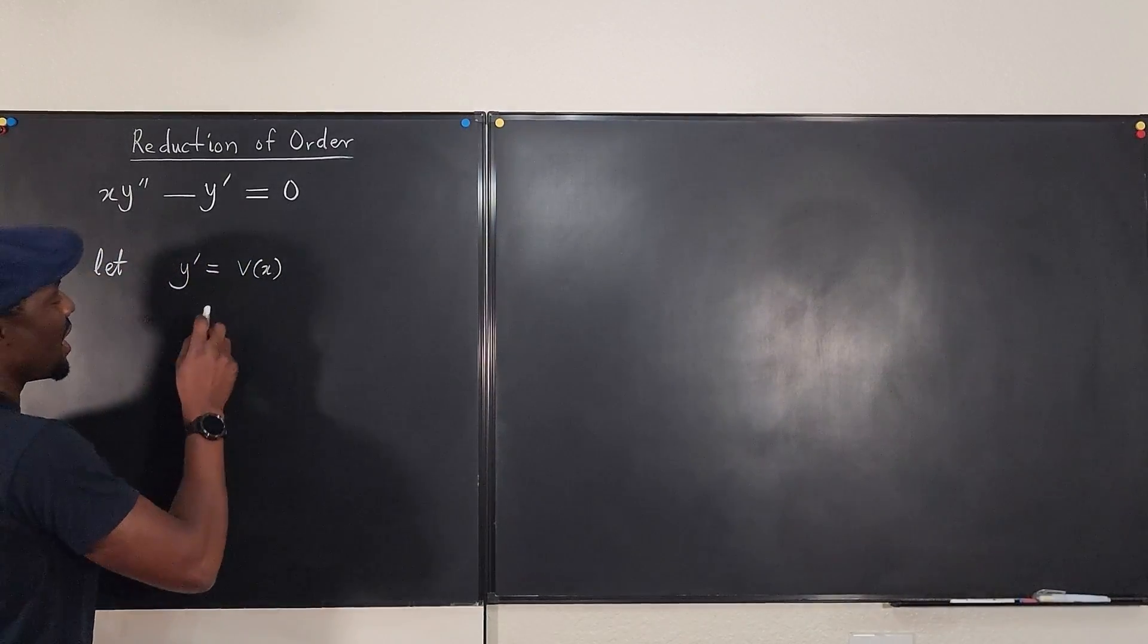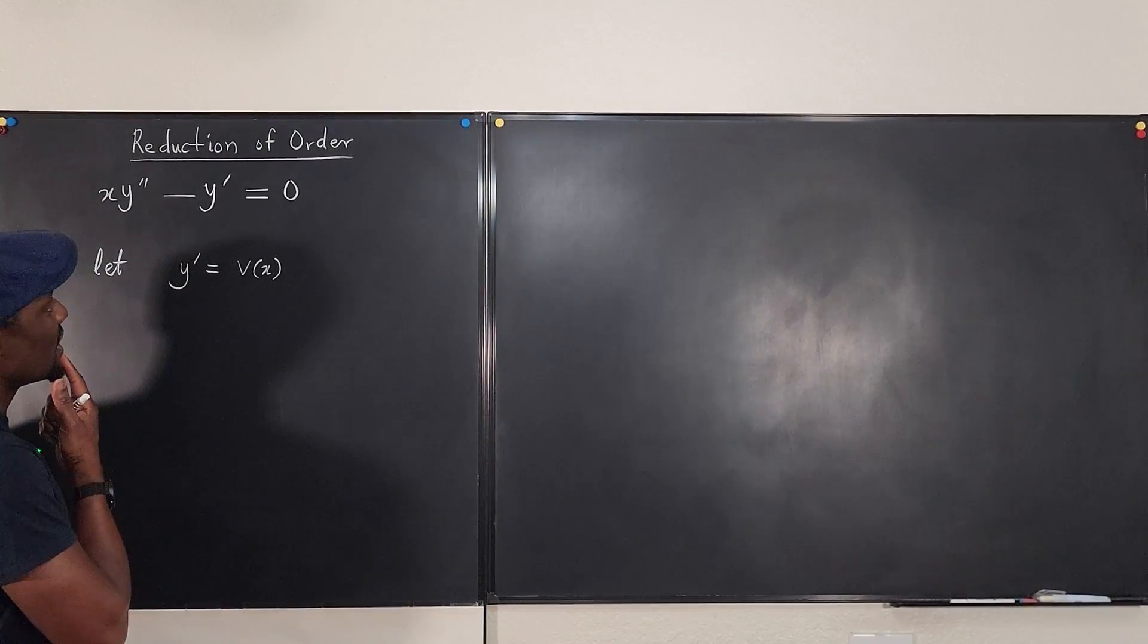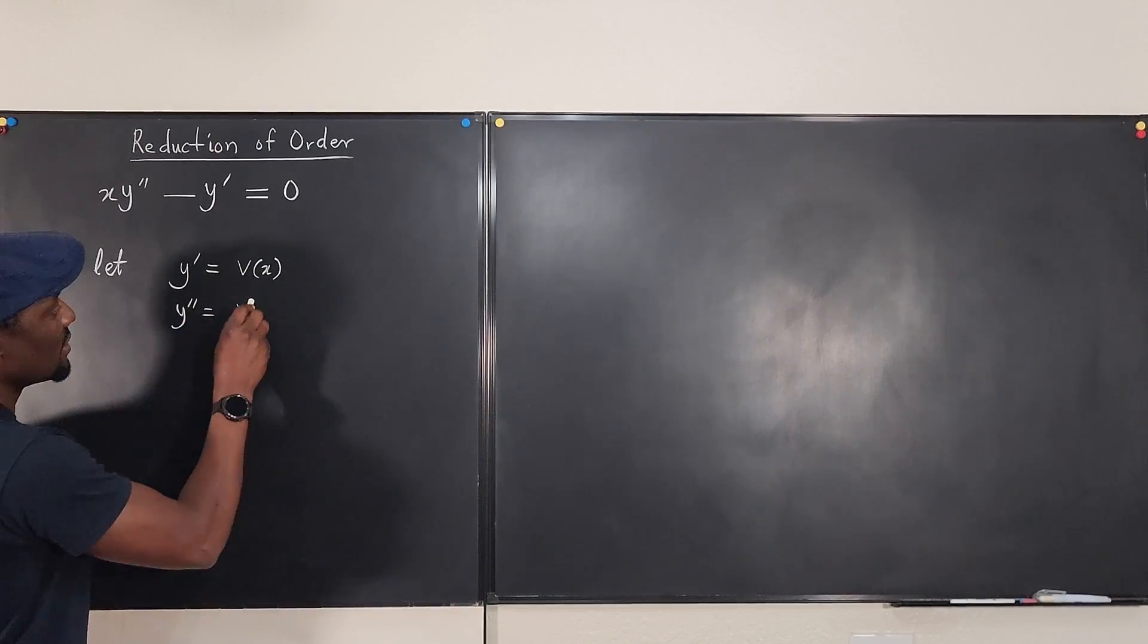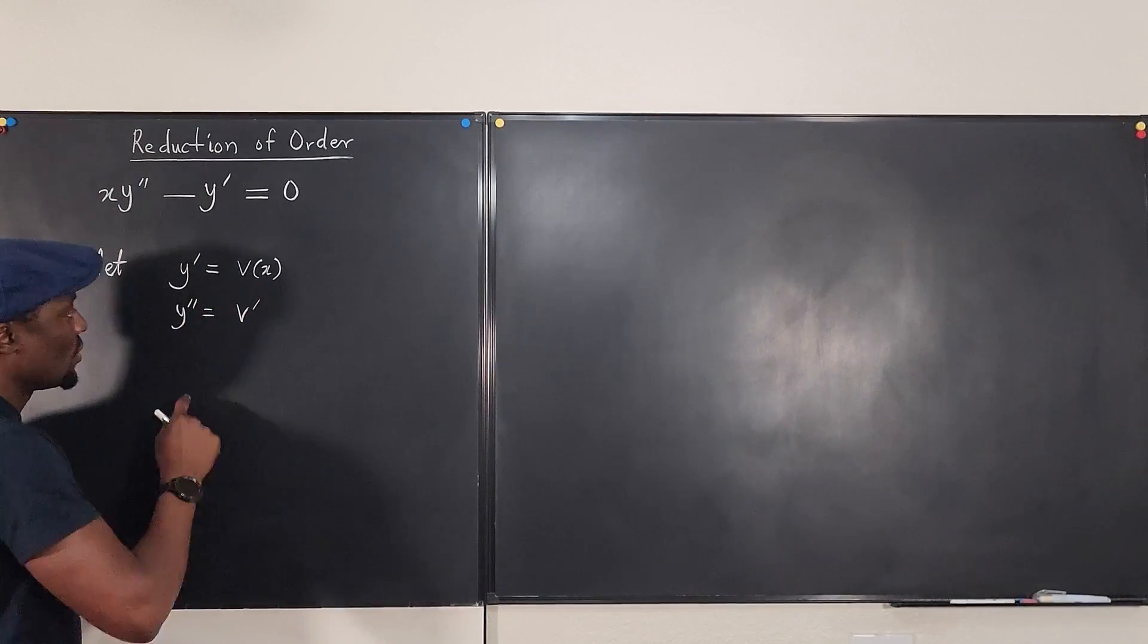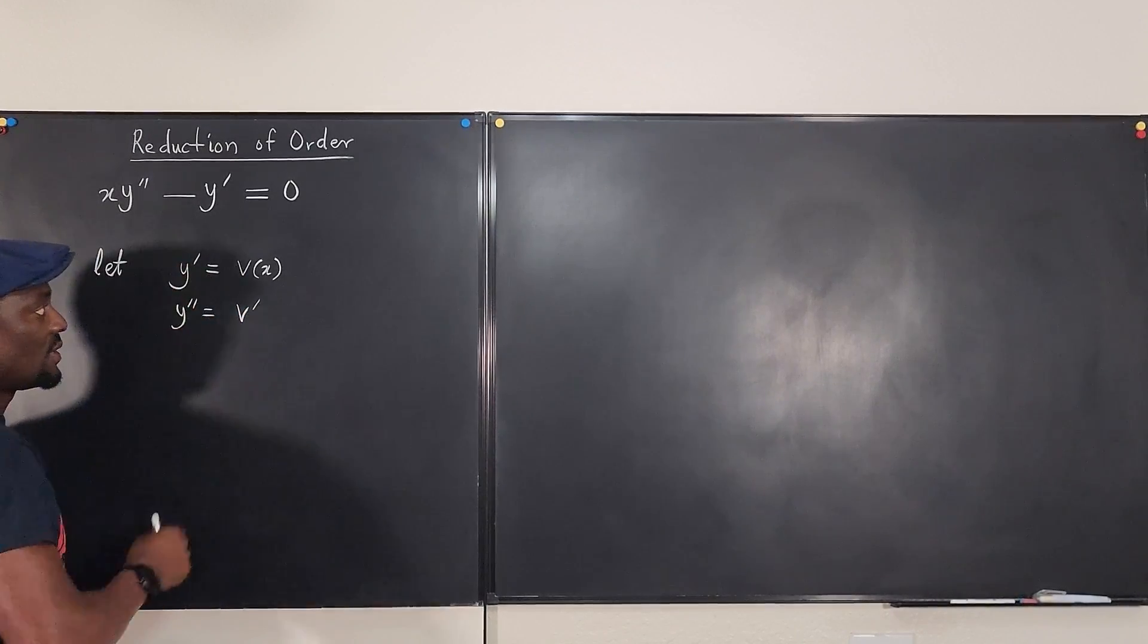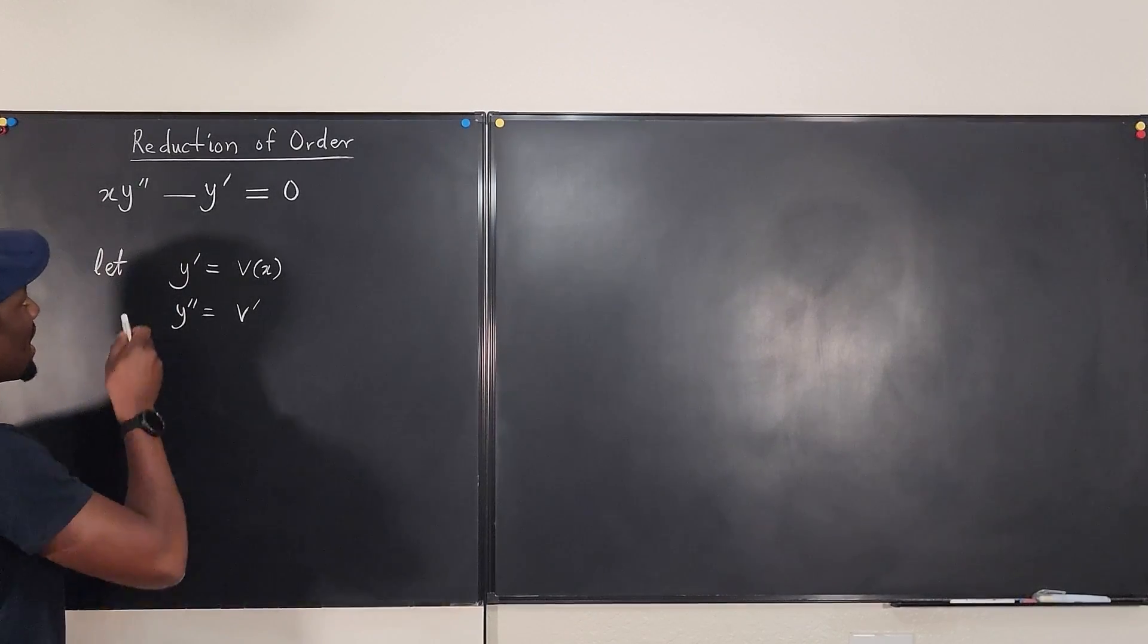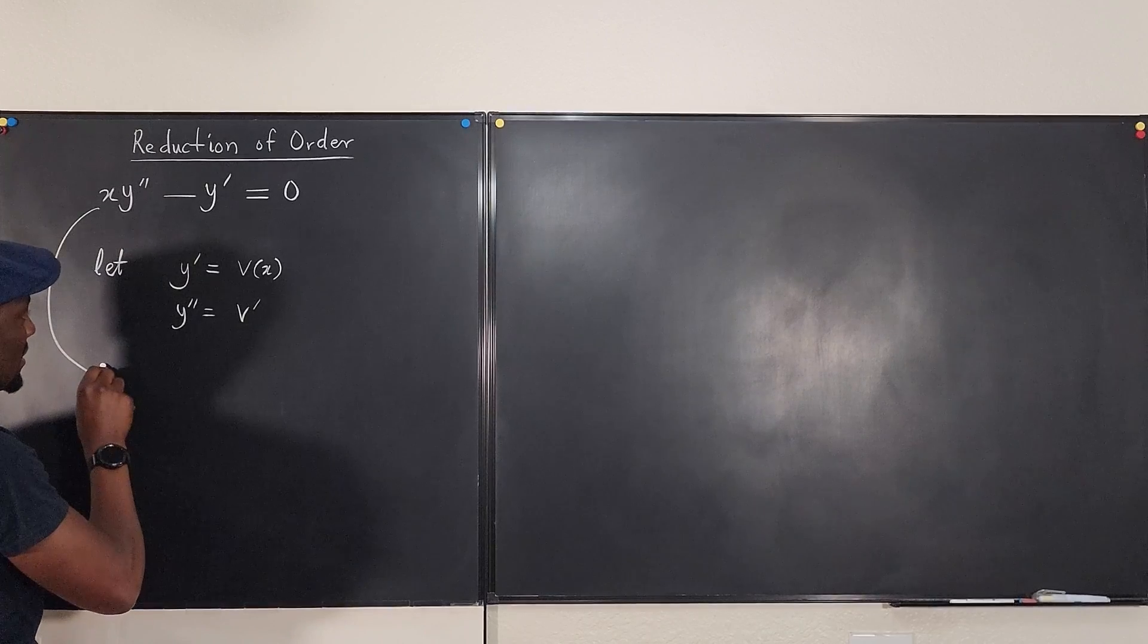So if y prime is v of x, we can say then that y double prime will be the derivative of this. Right? So I'm not going to write this anymore. So this is the derivative of this because this is the derivative of this.